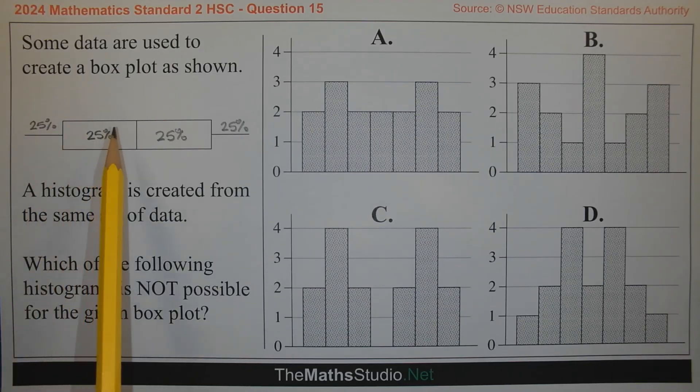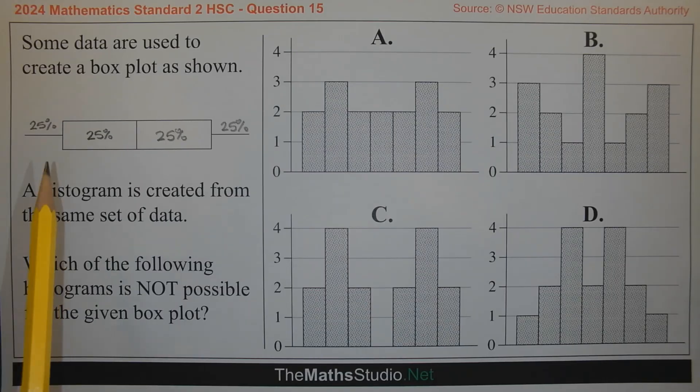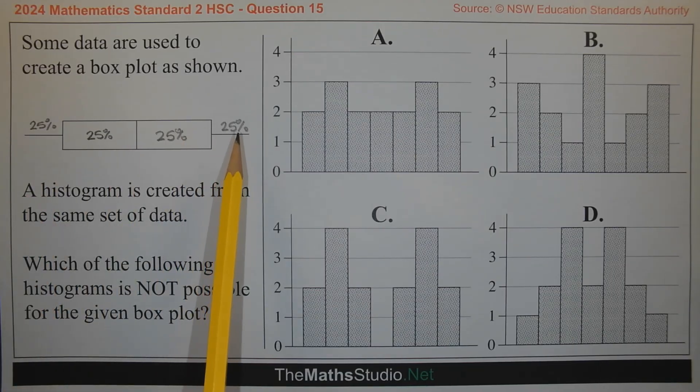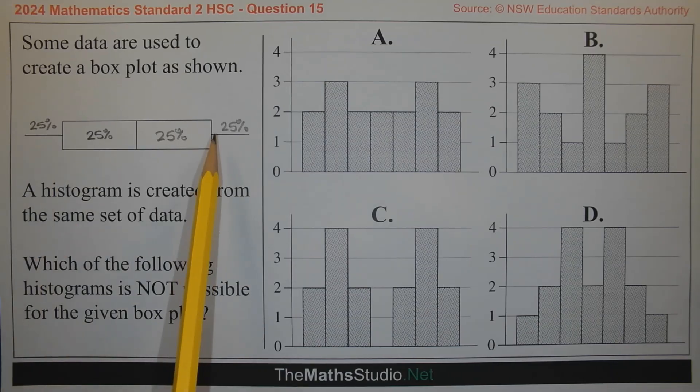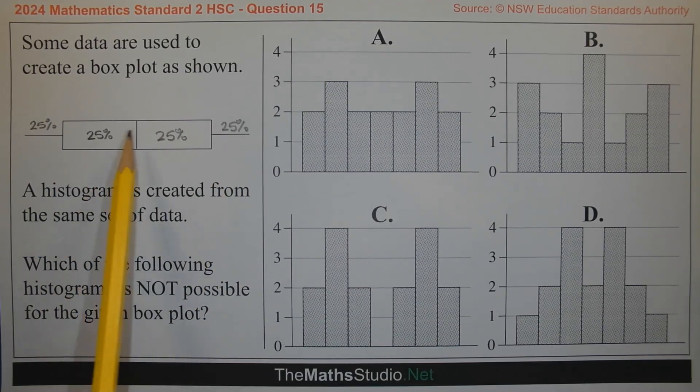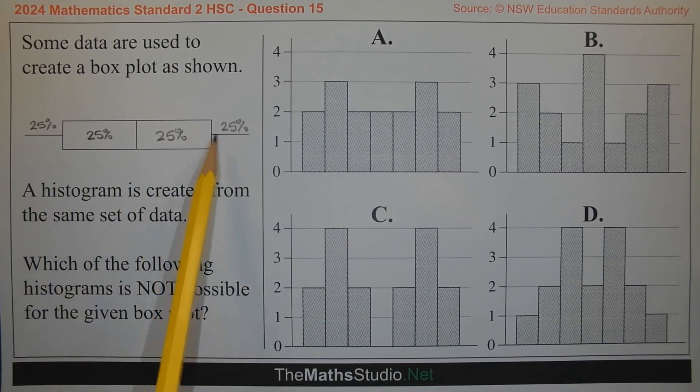Recall that each of the four components of a box plot represent 25% of the data. Now in this particular box plot what we notice is that the two tails are relatively short compared to the two rectangles that make up the box.